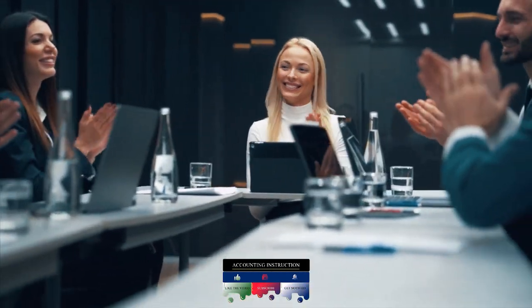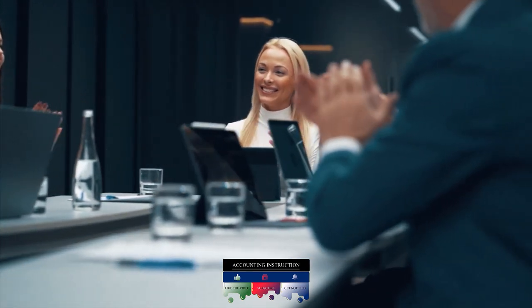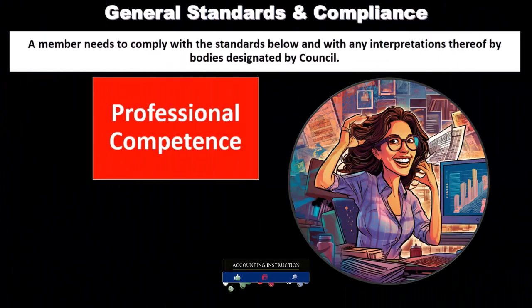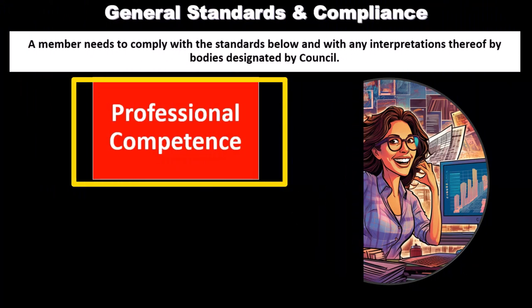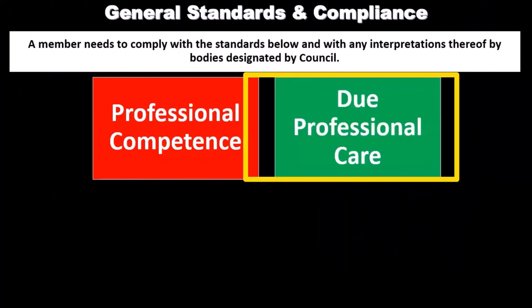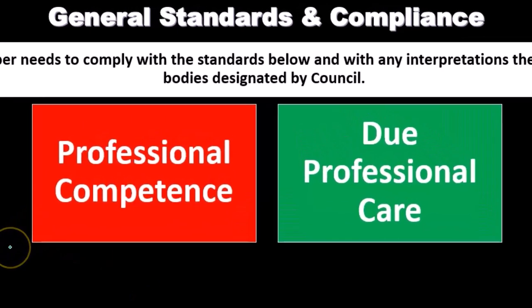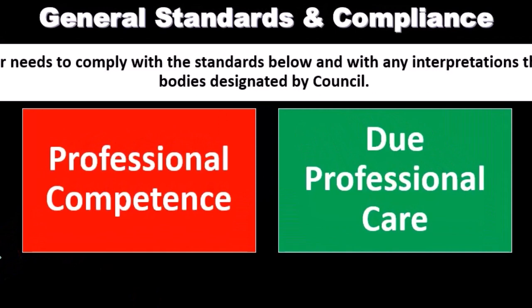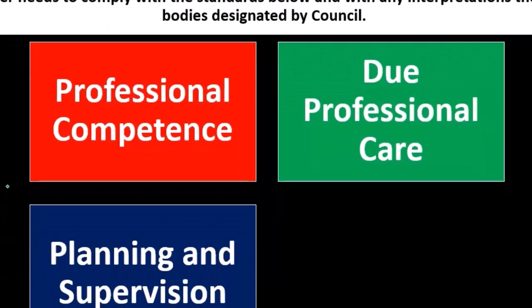We cannot be auditing different levels or different sizes of organizations. As we do so, we've got to make sure that we have the professional competence in order to audit those types of industries. Then we have due professional care. We want to make sure that we take due professional care within the audit process and apply due diligence within the performance of the audit procedures. We need to have the competence in order to do so, and then follow through with due professional care, planning, and supervision.